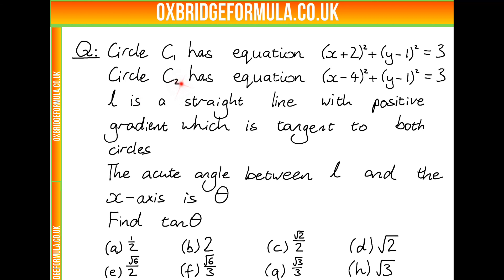and circle C2 with equation x minus 4 squared plus y minus 1 squared equals 3. We also have L, which is a straight line with positive gradient, which is tangent to both circles, and the acute angle between L and the x-axis is called theta.